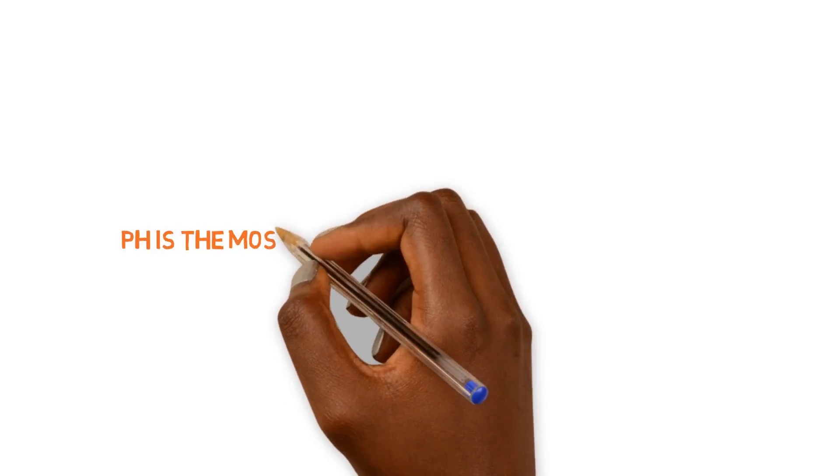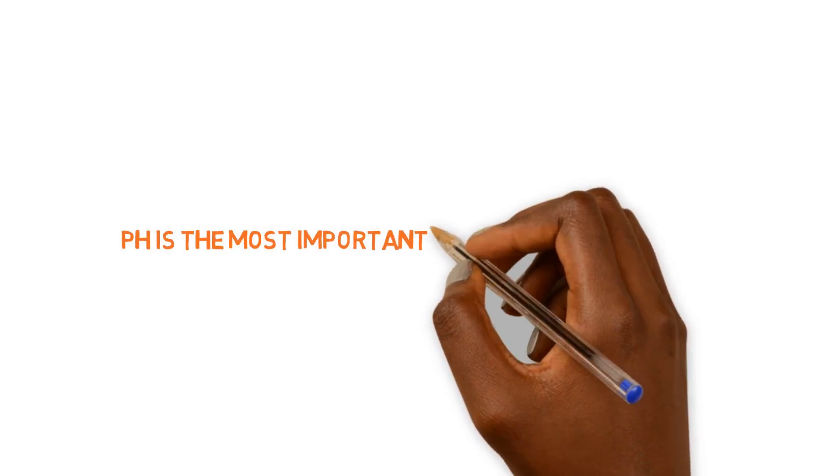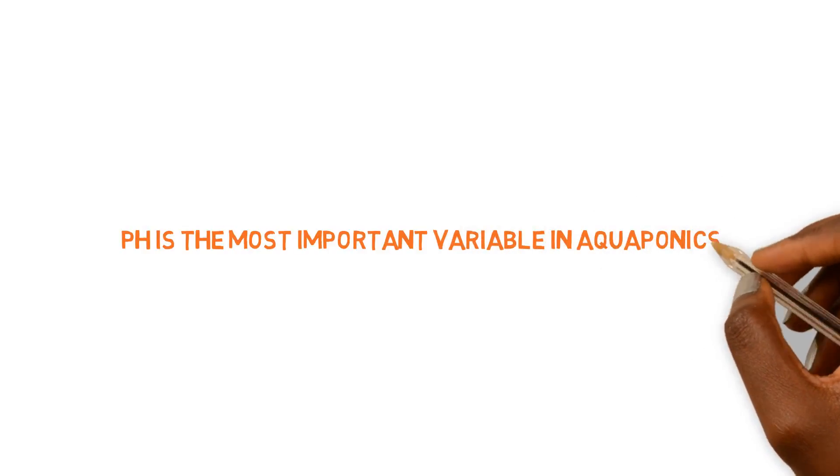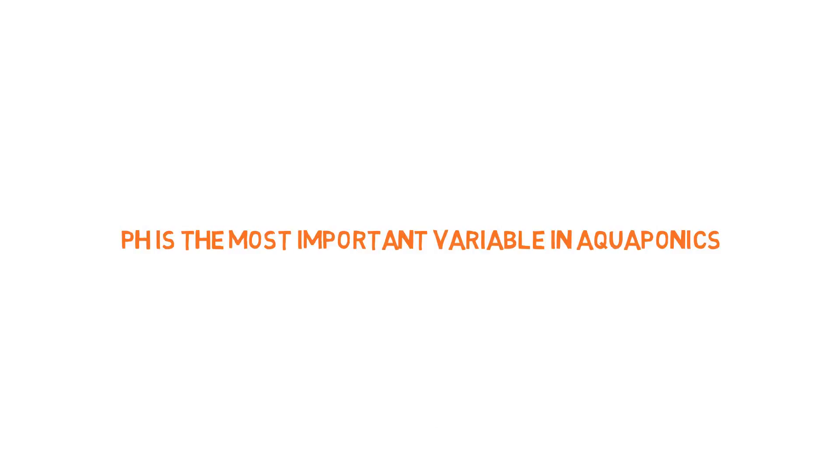So this is a super valuable question here. As some of you may know, I teach that pH is the single most important factor in an aquaponics system, dictating how your aquaponics system is going to run, how efficient it's going to run, and how productive it's going to be. So what we need to do is create three separate categories that are going to determine what pH range we should be operating at.